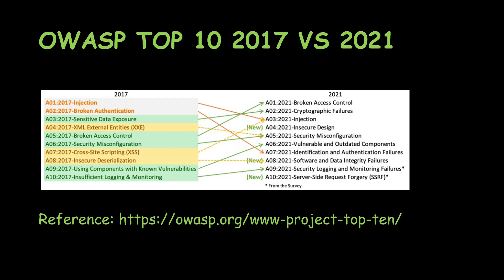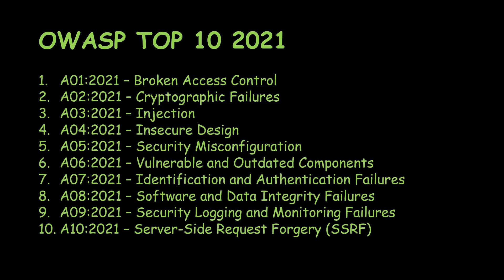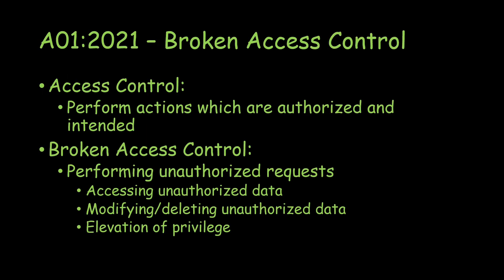There is a new addition: Insecure Design at position 4 for 2021, and also Server-Side Request Forgery at position 10. We'll look into these at a high level overview, just to understand the concepts. I'll keep things simple so that everyone can follow along, since not everyone will be coming from the same technical background. Let's get started with Broken Access Control.